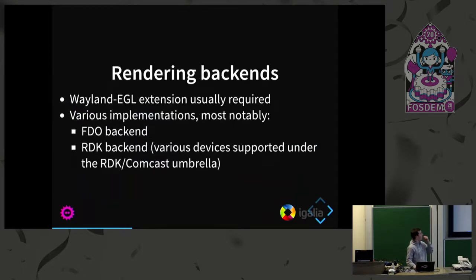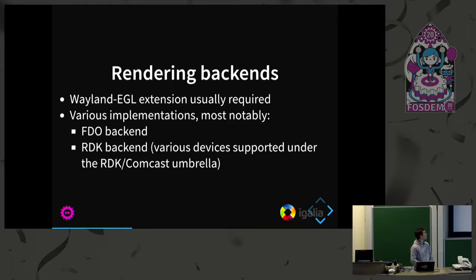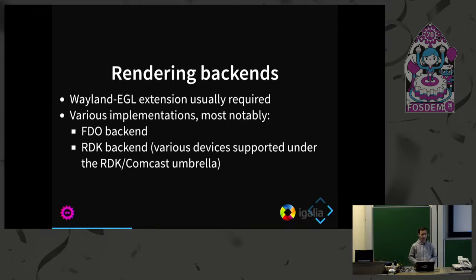These rendering backends usually require Wayland EGL, which is a way for applications to share graphics resources between processes, with EGL extensions dedicated to that. There are quite a few backends nowadays. I'll focus on two: the FDO backend, which I'll talk about in a minute, and the RDK backend, which is developed by companies such as Comcast and deployed in a wide range of set-top boxes around the world.